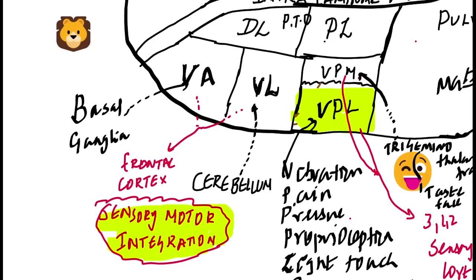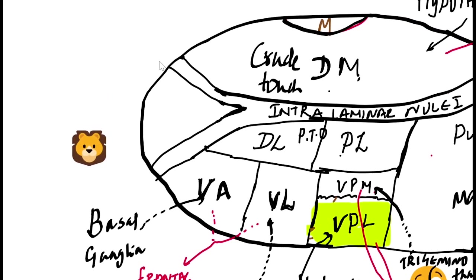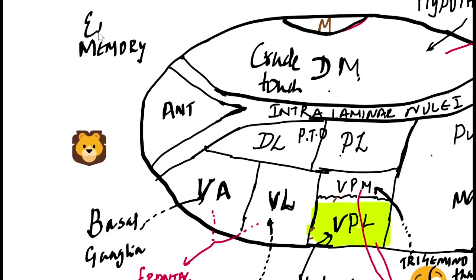This is memory. Memory and emotion are connected. This is the anterior nuclei — memory and emotion.